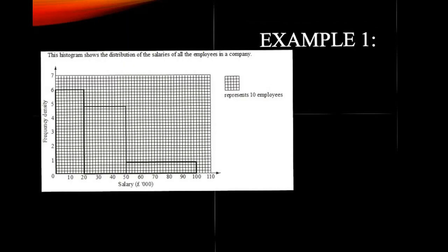First of all, let's have a look at an exam question and see if we can work out what a histogram is. In this particular picture it says this histogram shows the distribution of the salaries of all the employees in a company, and it shows a picture like this. You'll notice it looks a little bit like a bar chart, and that's because a histogram is in fact a bar chart — it's just a special sort.